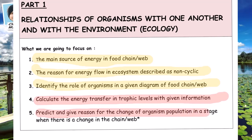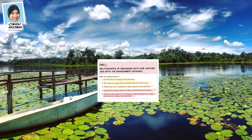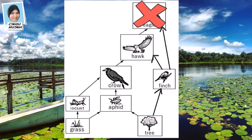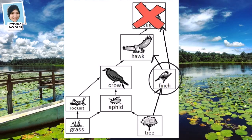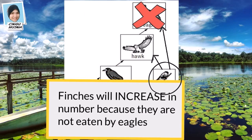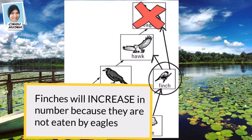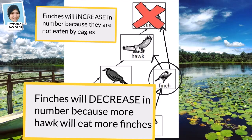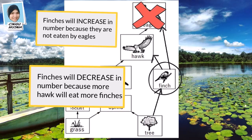The final point: predict and give reasons for the change of organism population when there is a change in the food chain or food web. For example, if the eagle dies off, what happens to the finch population? There are two possible answers: the finch population could increase because they are no longer eaten by eagles; or the finch population could decrease because without eagles, there will be more hawks, and more hawks will eat more finches. Both answers are correct.